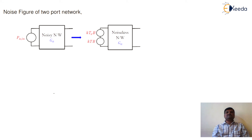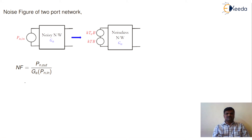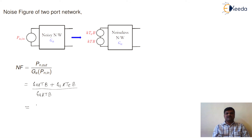Now, the noise figure of the two-port network is given as NF equal to output noise power divided by G_A multiplied by input noise power. We know the output noise power is given as G_A · kTB (input noise power) plus G_A · kT_e · B (noise power added by the internal device), all divided by G_A · kTB.